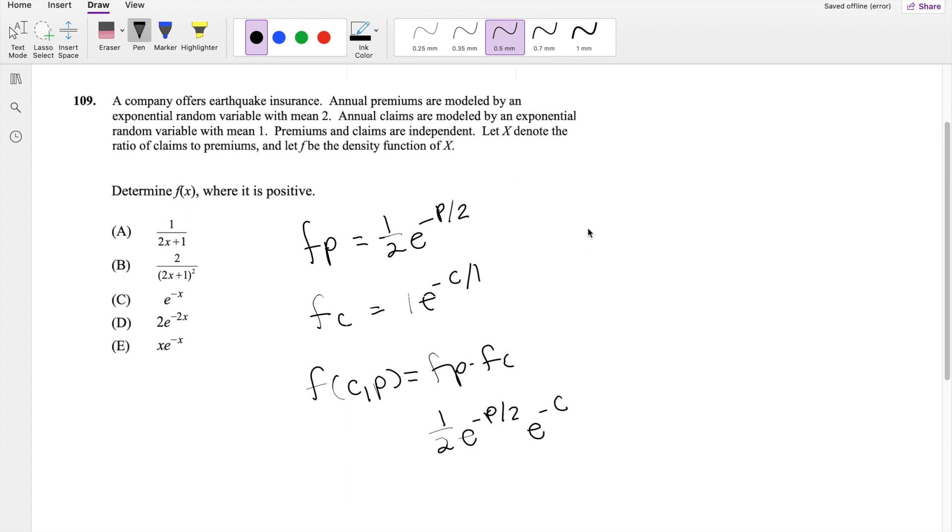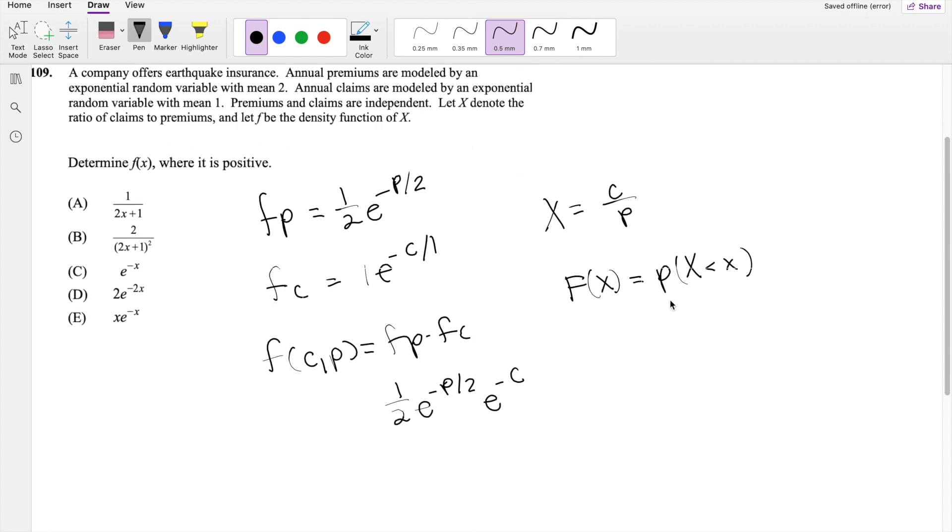And they also say the premiums and claims are independent, so we know the joint function of C, P is just equal to F of P times F of C. And we know that X is the ratio of claims to premiums, and we're asked to find the density function of X. We don't know what the density function of X is, but it's easy for us to find the CDF of X, which we know is the probability that big X is less than little x.